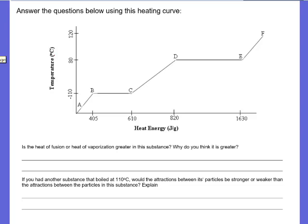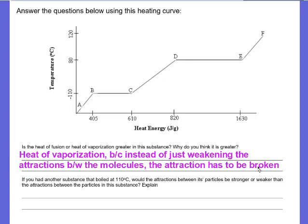Is the heat of fusion or heat of vaporization greater in this substance? And then why do you think it's greater? I'm going to pause the video and answer that one. So, you can clearly see from our calculations a second ago that the heat of vaporization is greater. And the reason has to do with the attractions. Heat of vaporization, because instead of just weakening the attraction, solids and liquids are both very close to each other. Liquids can just flow and so there's a little bit of space between them. While liquids to gas, we've got to break that attraction altogether. It's going to take a lot more energy to break an attraction than to just weaken it.